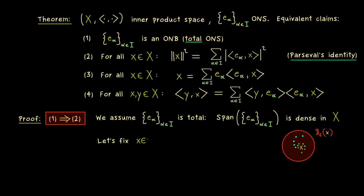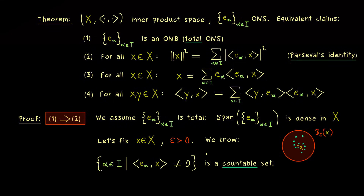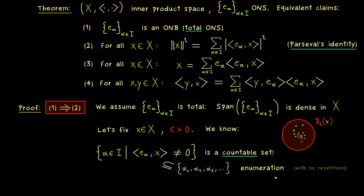To get Parseval's identity, let's fix our x in the inner product space and also epsilon greater than 0. Recall from the last video that it does not matter how large the index set I is — the essential contribution to Parseval's identity is always given by a countable set. So we choose an enumeration alpha_1, alpha_2, alpha_3, and so on — a countable subset of I with a bijection to the natural numbers. This makes everything simpler because we can now describe the denseness of the span with this enumeration.